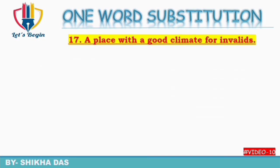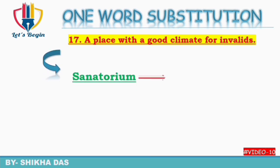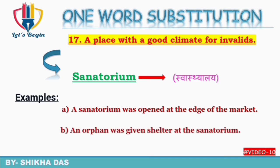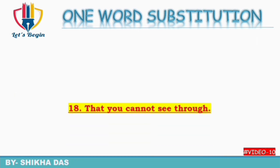Question number 17: a place with a good climate for invalids — invalids ke liye ek aisa place jahan unhe good climate milti ho. Isko kaha jata hai 'sanatorium'. Hindi mein bhi 'sanatorium' kehte hain. Examples: 'A sanatorium was opened at the edge of the market.' 'An orphan was given shelter in the sanatorium.' So sanatorium means a place with a good climate for invalids.